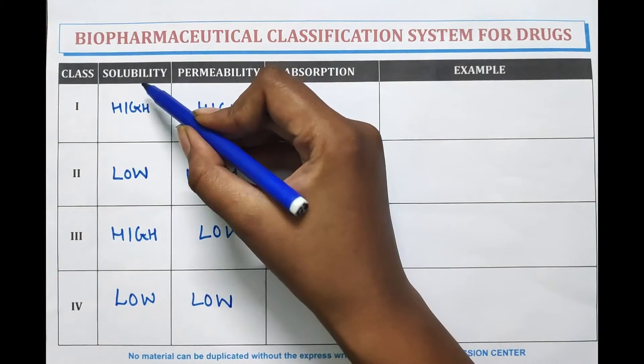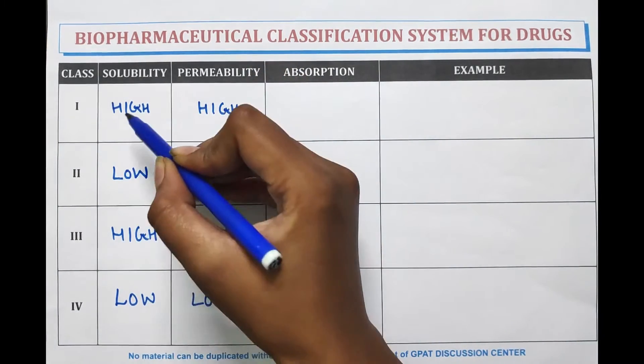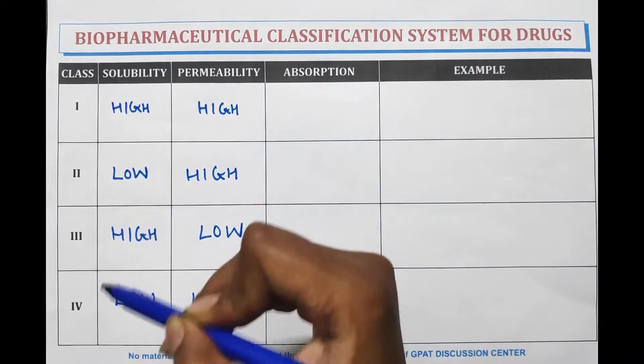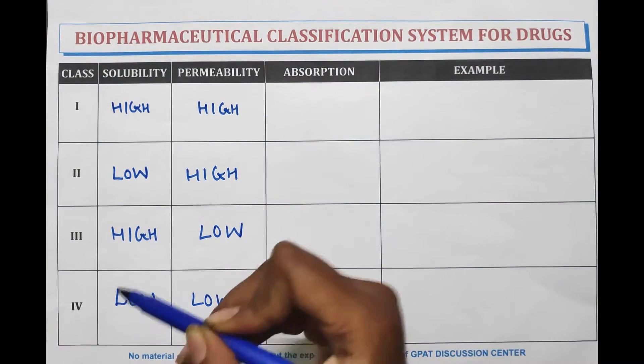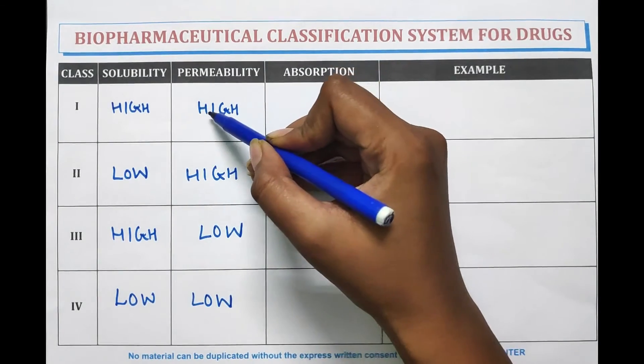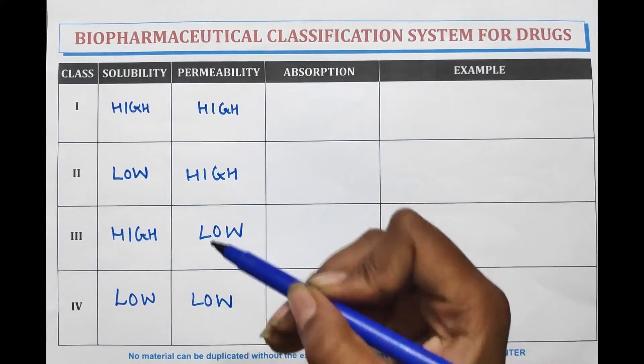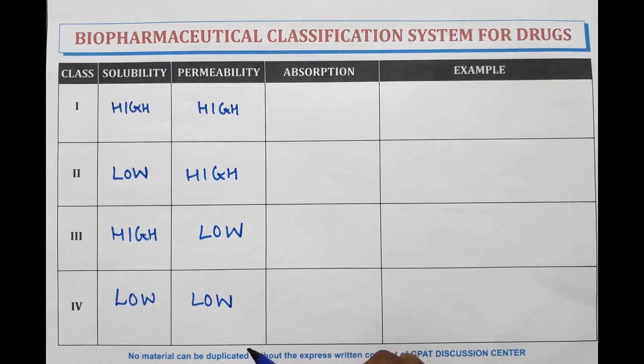A trick to remember solubility and permeability according to class: solubility is high, low, high, low — and permeability is high, high, low, low across classes one through four.